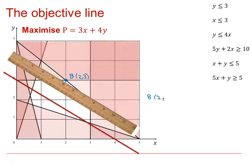So if (2, 3) is my solution, then p is going to be 3 times the x-coordinate, so that gives me 6, plus 4 times the y-coordinate, so that gives me 12, which is 18. So max p equals 18, and it occurs when x equals 2 and y equals 3.